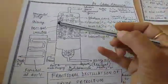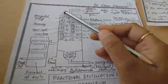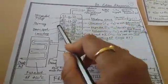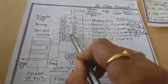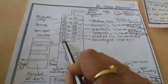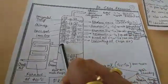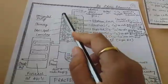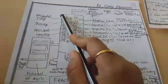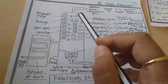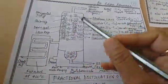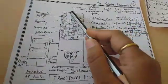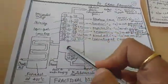In the fractionating tower, there are horizontal trays placed at short distances. On the horizontal trays, there are chimneys fitted with a loose cap. It also functions similarly to a pressure cooker and has downspouts for liquid flow between trays.